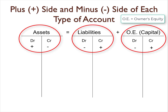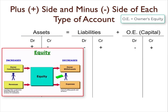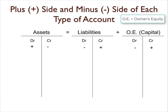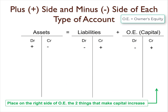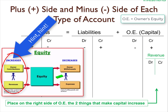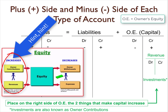But what about the four things that affect equity? Those are revenue, expenses, draws, and owner contributions, also known as owner investments. To help us, let's put the two events that increase the capital account on the increase side or credit side of capital. They are revenue and owner investments, also known as owner contributions.